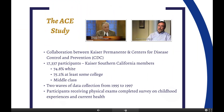The original ACE study was published in 1998. The two lead investigators were Dr. Vincent Felitti from Kaiser Permanente and Dr. Rob Anda from the Centers for Disease Control — a collaboration between Kaiser and the CDC. They looked at adult health outcomes and behaviors and tracked them against the number of adverse experiences those adults had in their childhood. The study included over 17,000 participants — mostly white, mostly college educated, and mostly middle class.